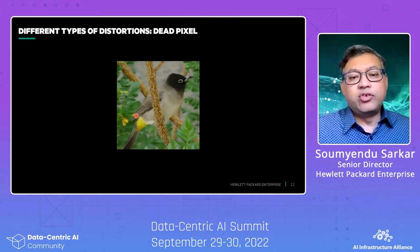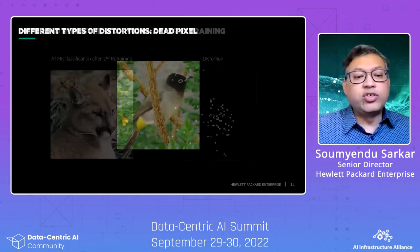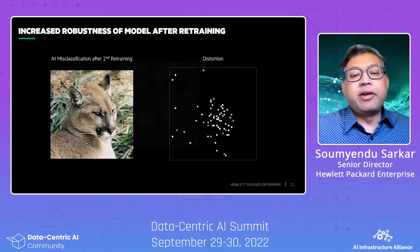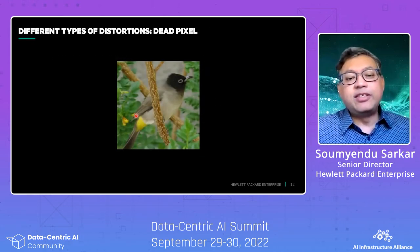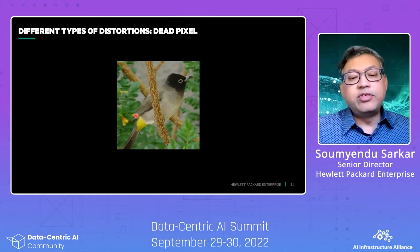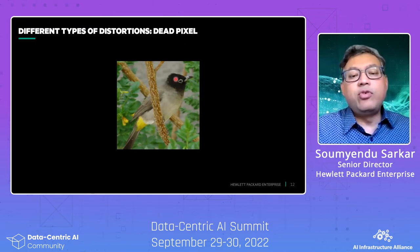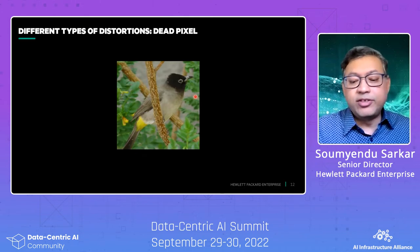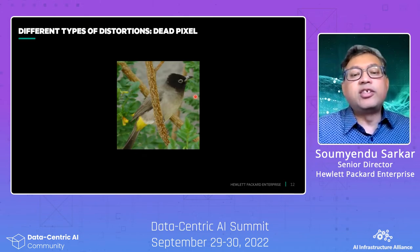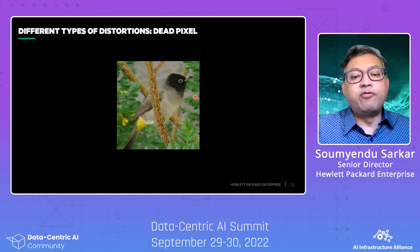Let's look at some other sorts of distortions. The earlier distortions are all based on Gaussian noise, which is naturally occurring noise. But we can also extend this to dead pixels. This is a picture of a bulbul, and there are tiny spots which come up, just like the dead pixels in image sensors, which cause such vulnerabilities for the model to flip.